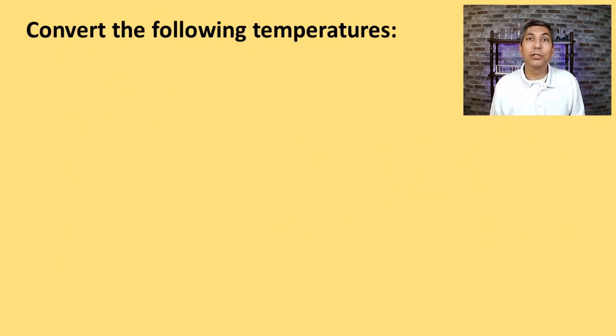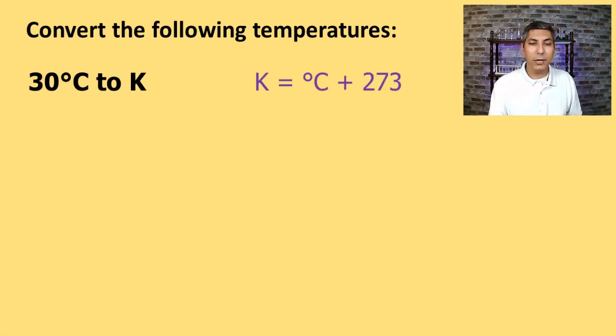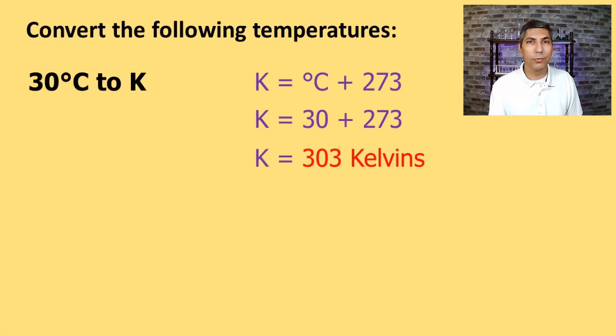Now, sometimes you'll be asked to convert from one temperature unit to another. So for example, let's say we have this question where we're asked to convert 30 degrees Celsius to Kelvins. Well, all you have to do is use this equation right here. Kelvins equals Celsius plus 273. And of course, we add 30 to the 273, and we find that the temperature is 303 Kelvin. So be able to do that fairly quickly using a calculator.